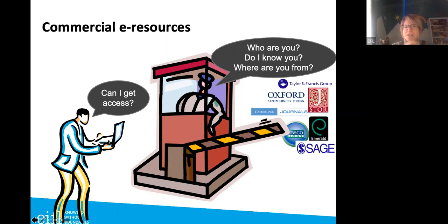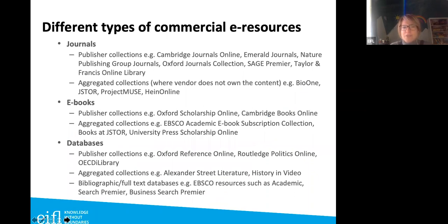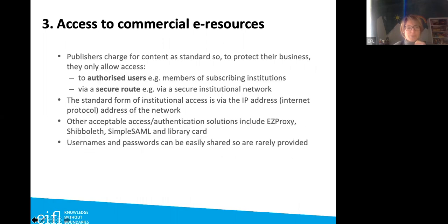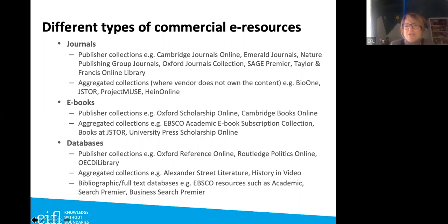What we'll talk about today is specifically commercial e-resources. There are a number of different types. First, journal collections — for example Cambridge University Press, Emerald, Nature, Sage — these are publisher-specific collections. Then there are aggregated journal collections, where the vendor doesn't own the content — for example JSTOR, Project MUSE, HeinOnline — these aggregate journals from multiple sources.